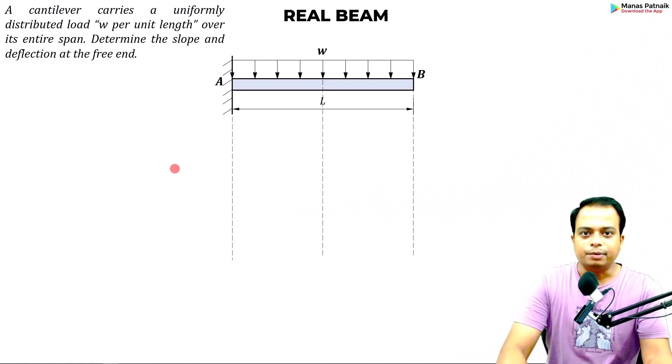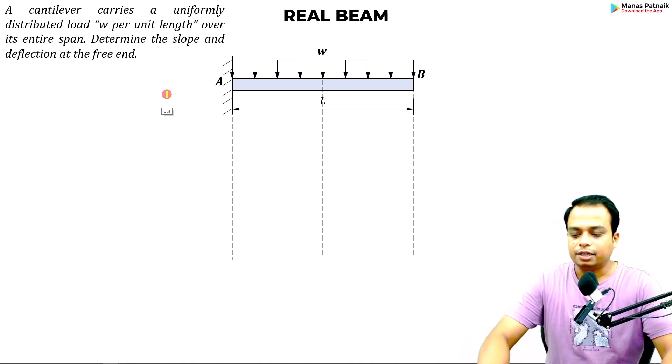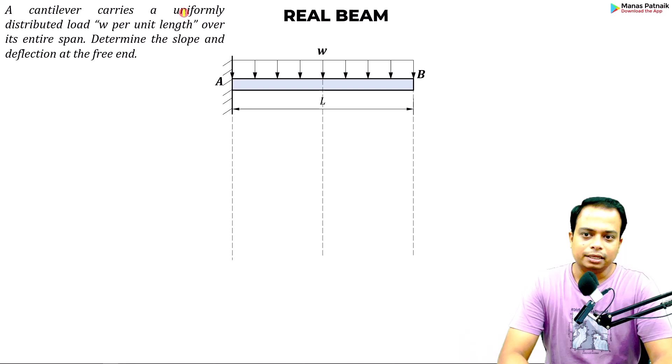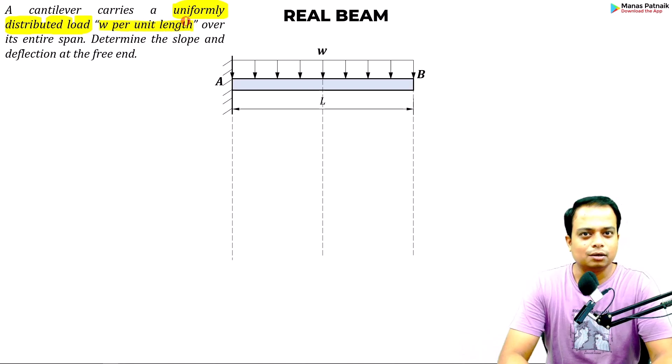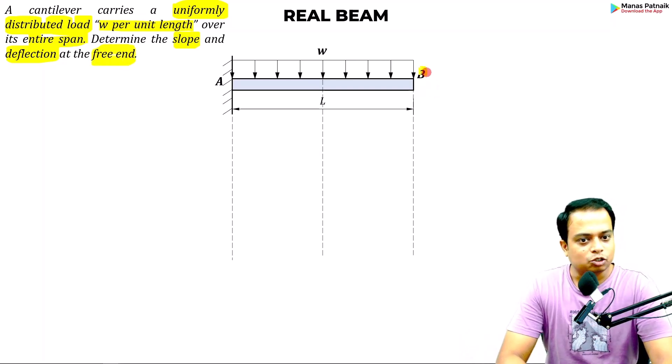This problem is based on a cantilever beam which is subjected to a uniformly distributed load. The cantilever beam is carrying a UDL whose magnitude is w per unit length over the entire span. We need to determine the slope and deflection at the free end, which happens to be point B.